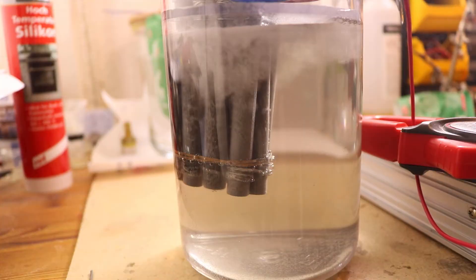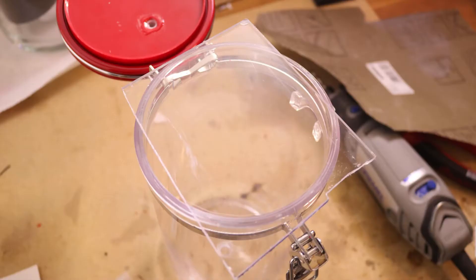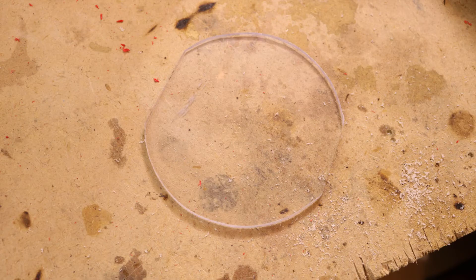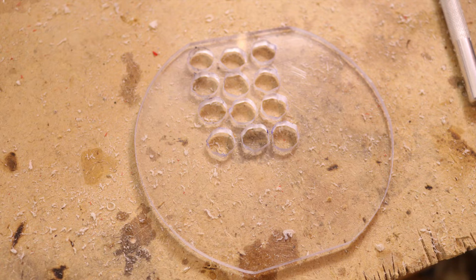The electrodes need to be fastened somehow, I decided to use a piece of plastic to hold them in place. I drilled 12 holes through the plastic to hold the electrodes. I used a multi-tool so it looks a bit rough.